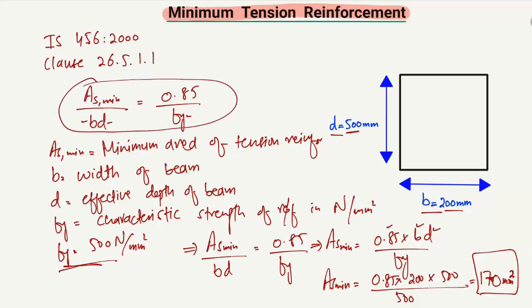We used this simple equation to determine the minimum tension reinforcement required for a beam cross-section. You need the characteristic strength of your reinforcement bar in megapascals or N/mm², along with the width and effective depth of your beam. Hope you guys understood — don't forget to subscribe to our channel for daily engineering videos. Thank you for watching.